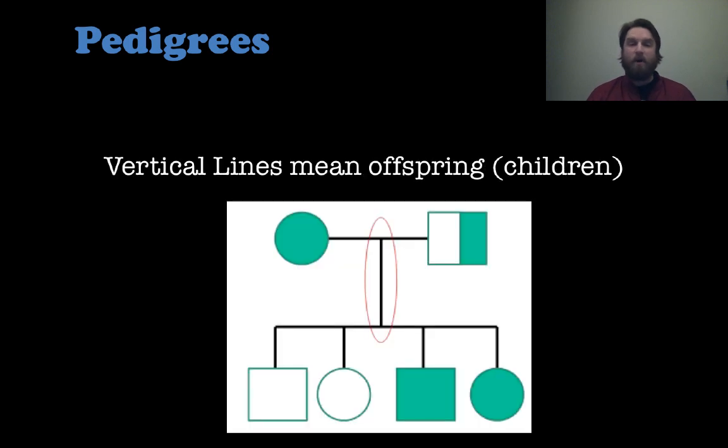A vertical line means there are offsprings. So you see the mating line between the female on the left and the male on the right, and then a vertical line straight down, and those are the offspring that they had. Two males and two females to be exact in this case.